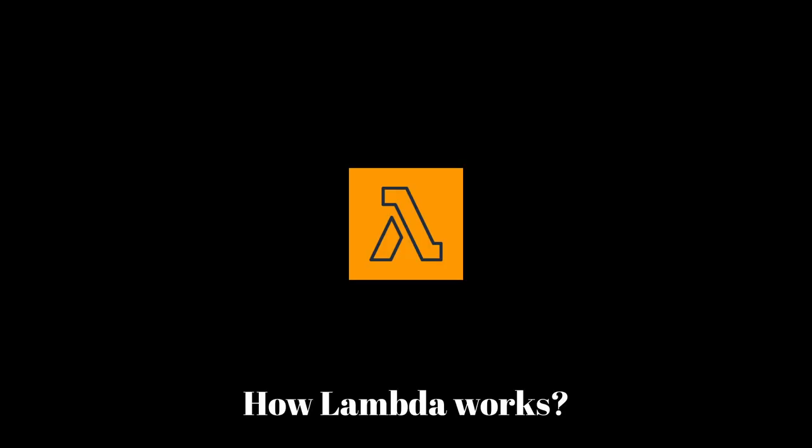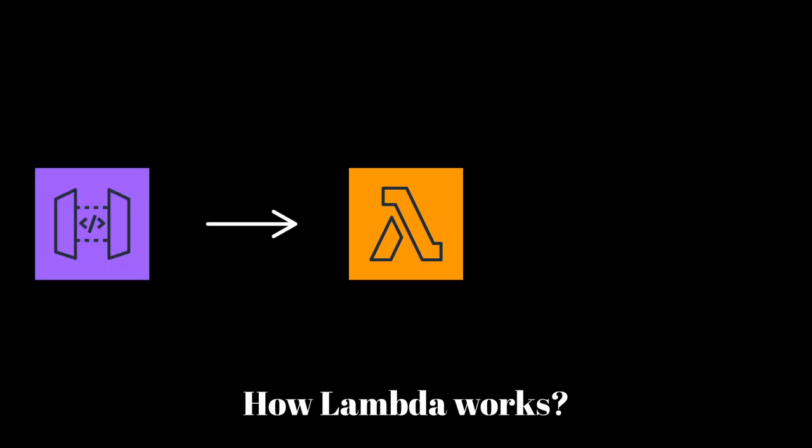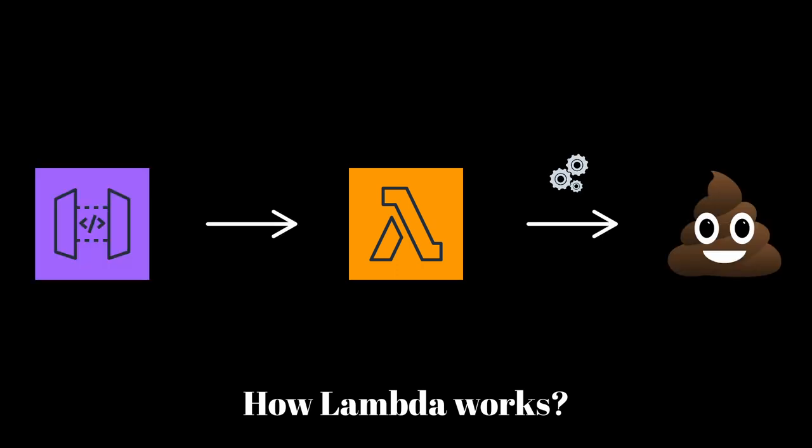In order for Lambda to work, you need some trigger or event. Without any event, Lambda can't do any work — that's why it's called serverless; it's an event-driven architecture. When an event triggers Lambda, it tells it to do some processing: get an item from the database, do various tasks, and so on.